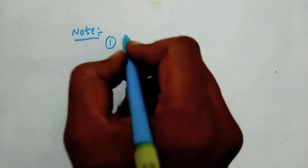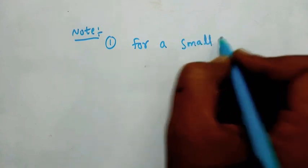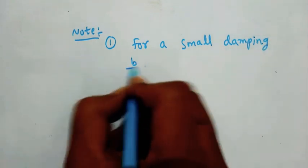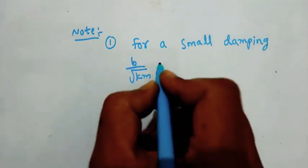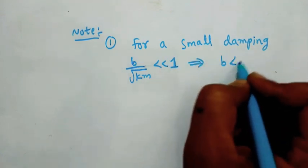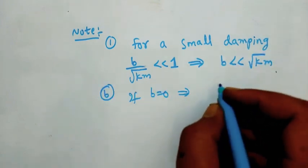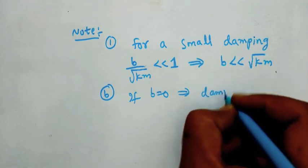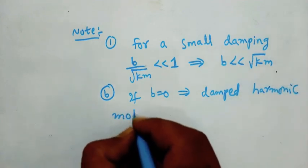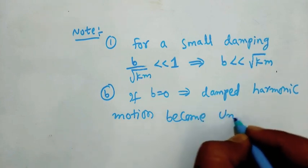Note: for small damping, we have the condition that B divided by the square root of Km is less than 1, meaning B is very much less than root Km. If B equals 0, the damped harmonic motion becomes undamped harmonic motion.